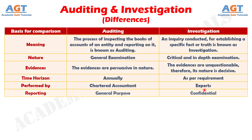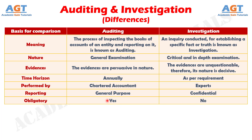Number six: general purpose reporting is done in auditing, whereas reporting is confidential in an investigation. Number seven: auditing is compulsory for every company. On the other hand, investigation is discretionary.